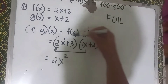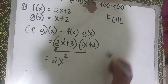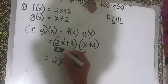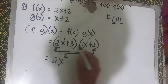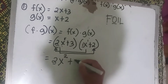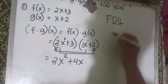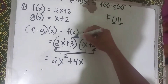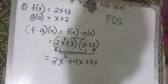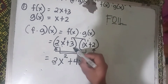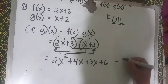Next, Outer: 2x times 2 gives 4x. Then Inner: 3 times x gives 3x. Then Last: 3 times 2 gives 6.